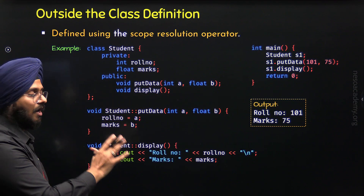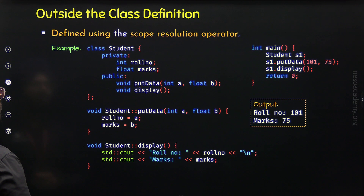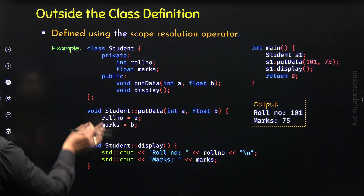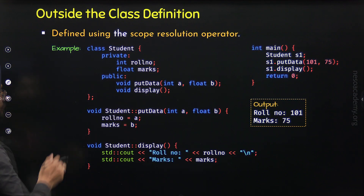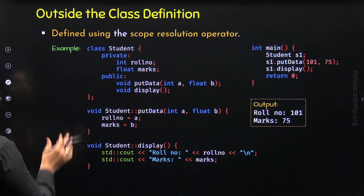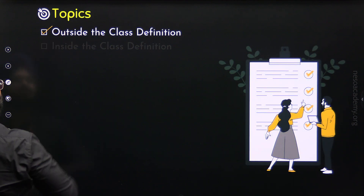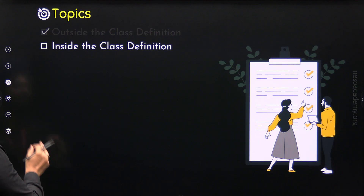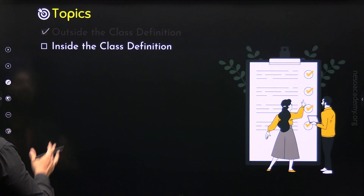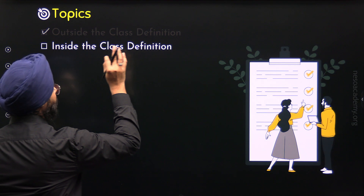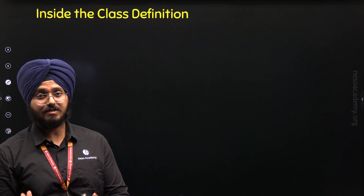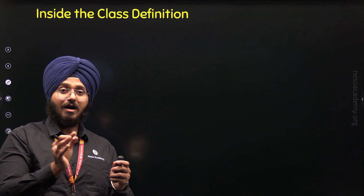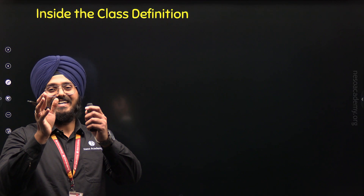I hope this program is absolutely clear to you. Through this program, we learned how to define member functions outside the class with the help of the scope resolution operator, and we are now done with the first topic. Let's move to the second topic to understand how to define member functions inside the class definition.